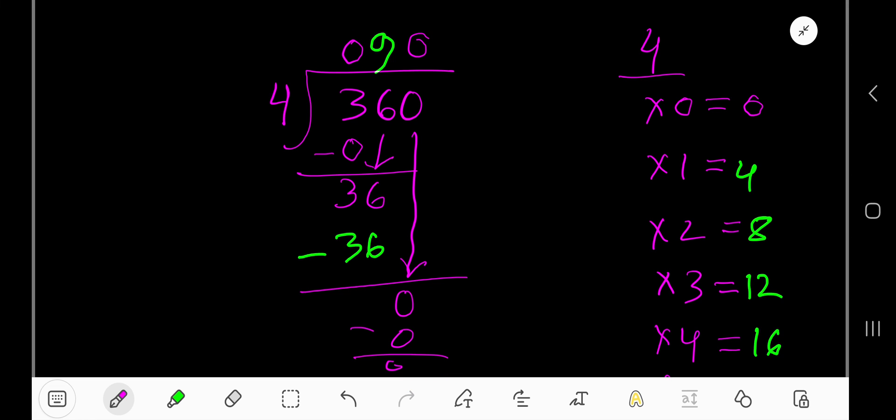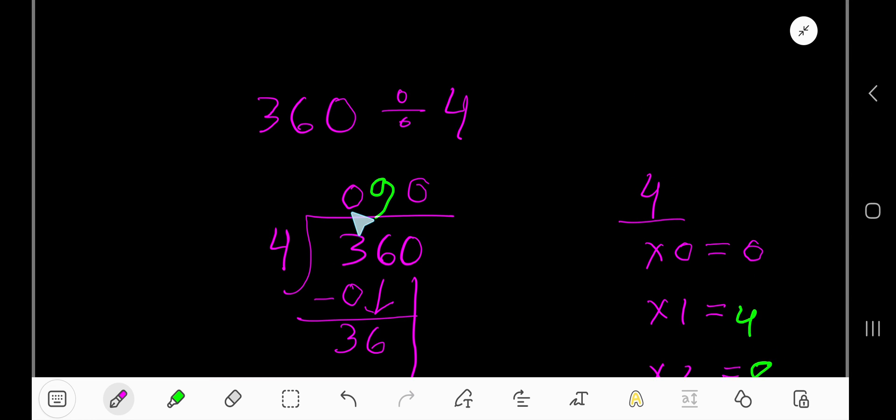So this 0 doesn't have any value since it is situated on the left-hand side of this digit, so you can delete it. That is, 90 is the answer. 360 divided by 4 equals 90.